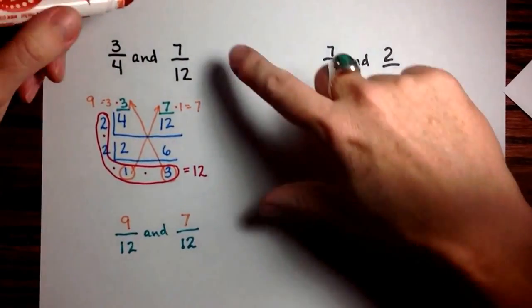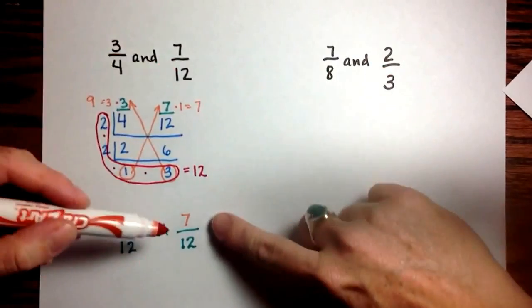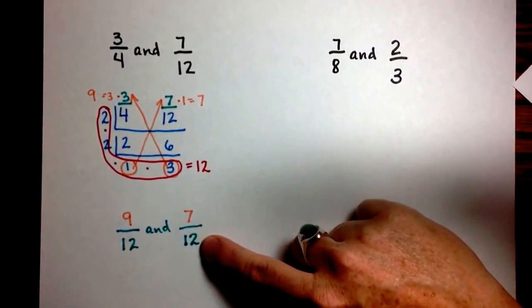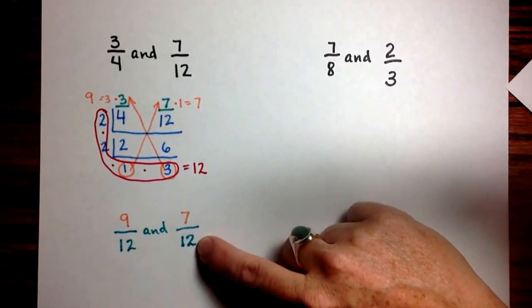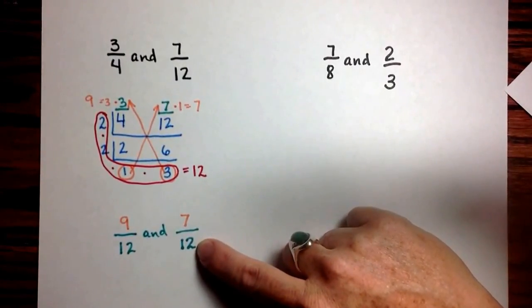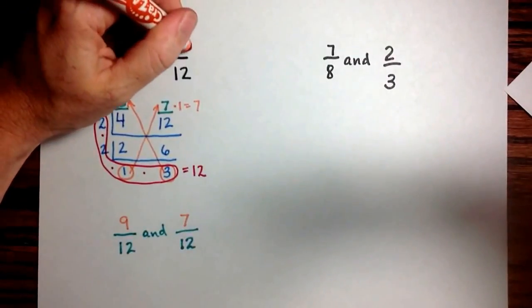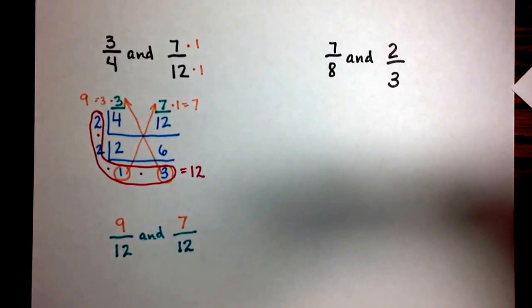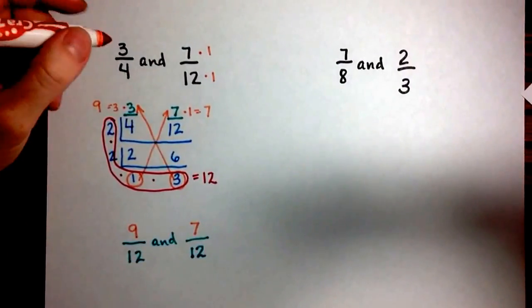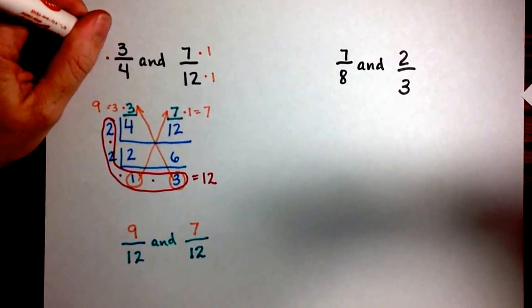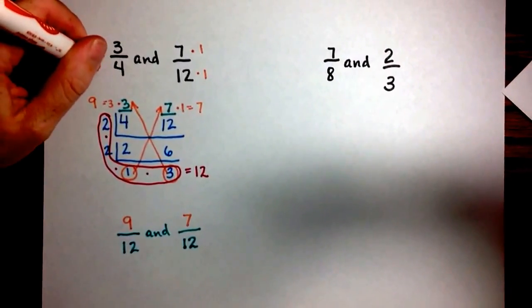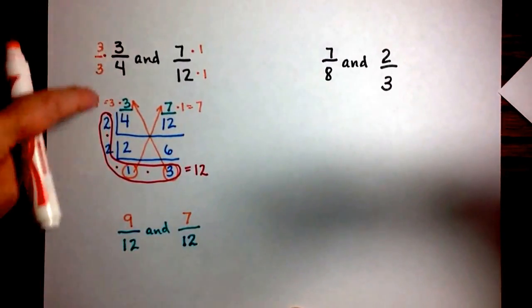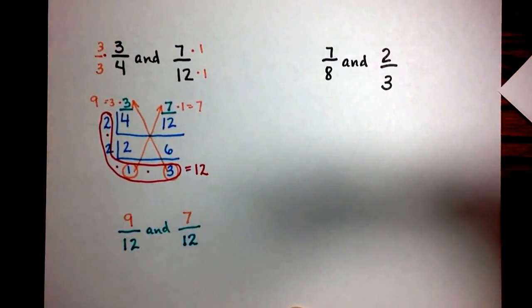So if you notice here, the 7 twelfths stays a 7 twelfths, since it already had the denominator that was the least common denominator between 4 and 12. So this fraction, multiplying it by 1 one-th, keeps it the same. This fraction, we needed to multiply by 3 thirds, in order to get the bottom to be a 12, and the top to be a 9.